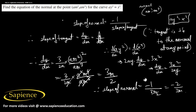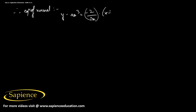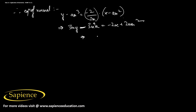The equation of the normal at the point (am², am³) is: y − am³ = (−2/3m)(x − am²). Multiplying both sides by 3m: 3my − 3am⁴ = −2x + 2am². Rearranging: 3my + 2x = 3am⁴ + 2am².